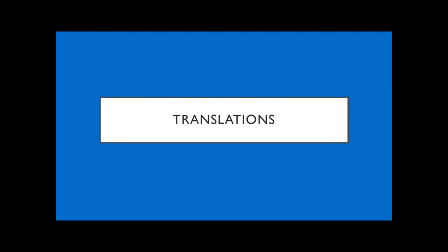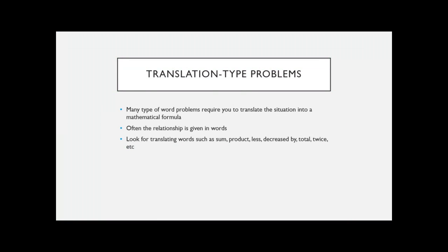I've got this set up in larger categories with different types of problems within each. The first big category is translations — this is the type of problem where you take an English sentence and have to translate it into a math equation. You know you're in this situation when they're using certain translating words like sum, product, less, decreased by, total, twice — for example, 'the cost of this meal was twice the cost of the other meal.' These math-type words indicate you have to translate the sentence into an equation.